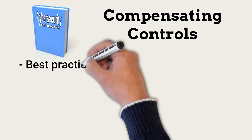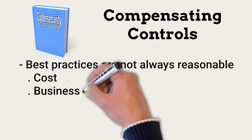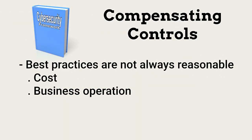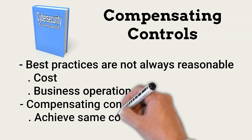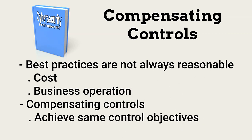Best practice controls described in frameworks or regulations are not always reasonable and appropriate for an organization. A big reason for this are high costs associated with staffing or adverse impacts on business operation. When the cost is too high, an organization can use compensating controls, which replace best practice or regulatory standards with controls that achieve the same control objectives, but do so at a reasonable cost.